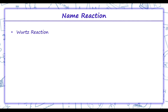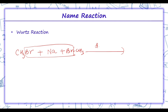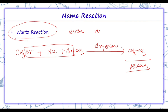Moving on to Wurtz reaction. In Wurtz reaction, two moles of alkyl halides are taken in the presence of sodium. NaBr is removed in the presence of dry ether, and we get an alkane such as CH3-CH3. In this reaction, basically even-numbered alkanes are prepared.